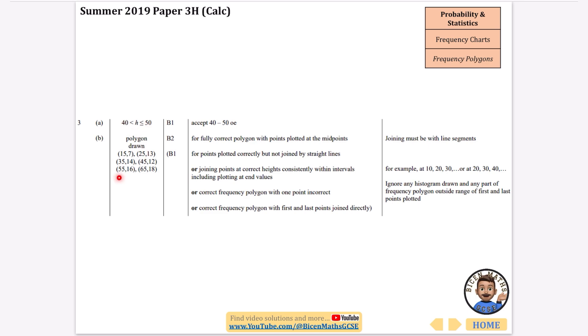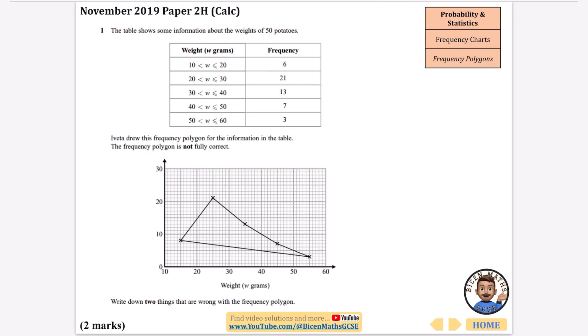Okay this time we just need to write down a couple of things that are wrong with this. So it says the table shows some information about the weights of 50 potatoes, Iveta drew this frequency polygon for the information in the table, the frequency polygon is not fully correct, write down two things that are wrong with the frequency polygon. Well one of the things is this line at the bottom, the first and last points should not be joined, so I'm going to say the first and last points should not be joined.